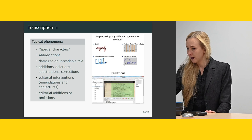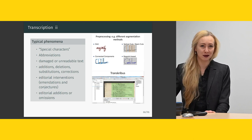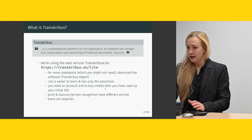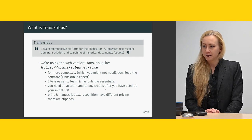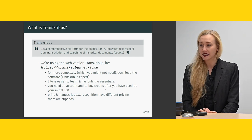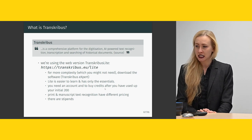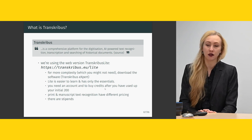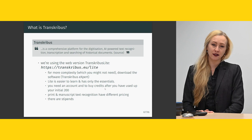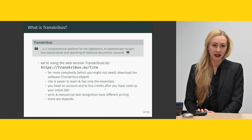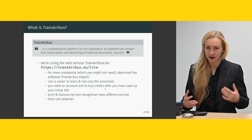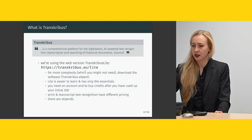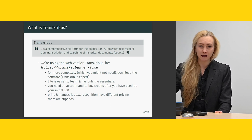So what is Transkribus? The self-definition is that Transkribus is a comprehensive platform for the digitization, AI-powered text recognition, transcription, and searching of historical documents. We will be using Transkribus Lite, and we have asked you to create an account. If you haven't done so already, it doesn't take long. The website is transcribers.eu-lite.